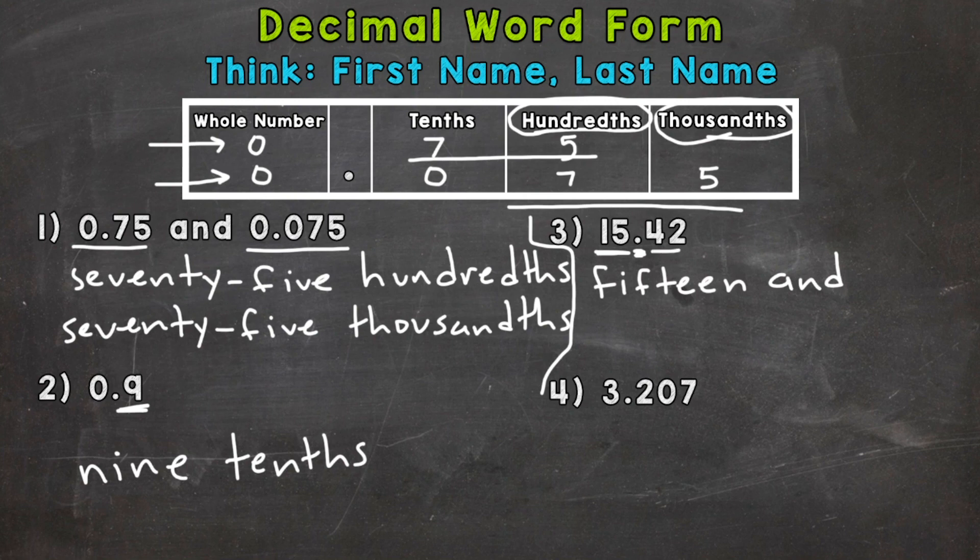Then we just apply the first name, last name. So read this number as is, 42. And the last name, wherever that decimal ends. And in this case, it ends in the hundredths place. So we have 15 and 42 hundredths.